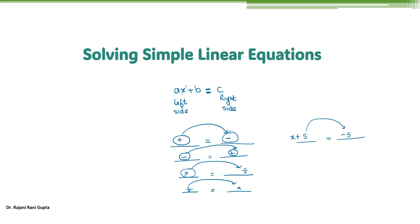The same thing is applicable when you move from right to left. If you move a negative from right to left, it will change to positive. In other words, positive gets changed to negative and negative gets changed to positive as we move from left to right or right to left. And multiply changes to division, and division changes to multiply as we move from left to right.